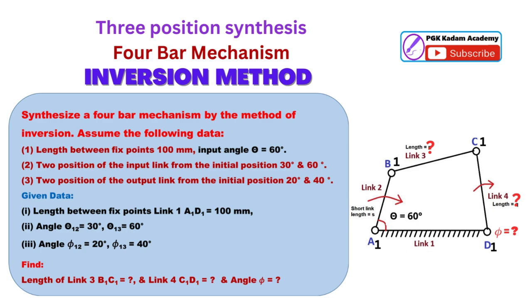1. Length between fixed points A1D1 equal to 100 mm — this is link 1, which is the fixed link — and input angle theta equal to 60 degrees. 2. Two positions of the input link from the initial position are given: first position, input angle theta 12 equal to 30 degrees; second position, input angle theta 13 equal to 60 degrees.